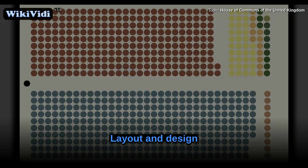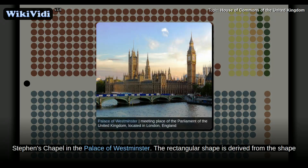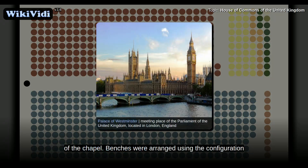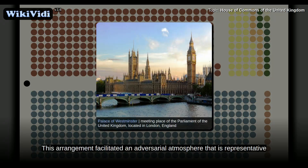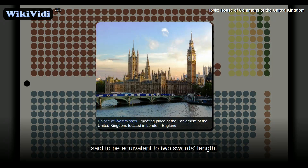Layout and Design. The current Commons layout is influenced by the use of the original St. Stephen's Chapel in the Palace of Westminster. The rectangular shape is derived from the shape of the chapel. Benches were arranged using the configuration of the chapel's choir stalls whereby they were facing across the aisle. This arrangement facilitated an adversarial atmosphere that is representative of the British parliamentary approach. The distance across the floor of the House between the government and opposition benches is 3.96 metres, said to be equivalent to two swords' length.